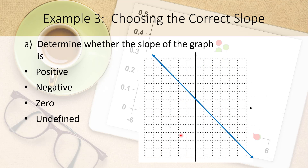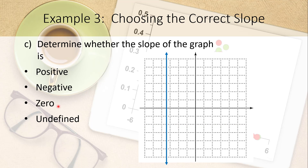Given four graphs, determine whether each slope is positive, negative, zero, or undefined. The first is negative — it goes downhill. The second is flat, so its slope is zero. The third is completely vertical, so it is undefined. The fourth goes uphill, so that is a positive slope.